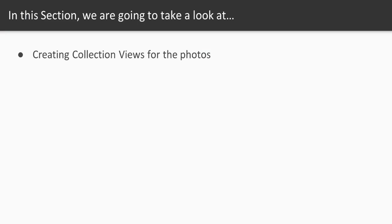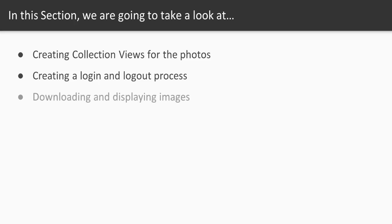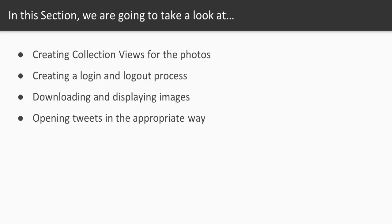So what are we going to be covering in this section? First we're going to be creating collection views so that we can display these photos in a really nice way. Next we're going to be creating a login and logout process. Then we are going to be downloading and displaying some images. And finally we want to make it so that we can open tweets in the appropriate way — if the user's Twitter app is on the phone they can jump straight to the app, and if not they could open up a web browser.